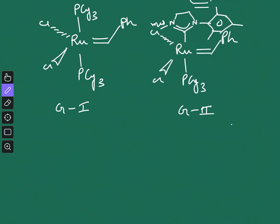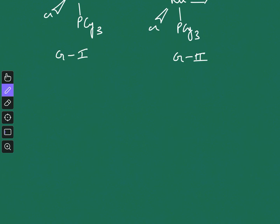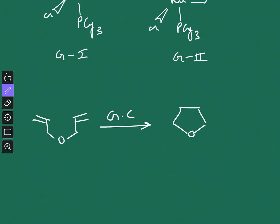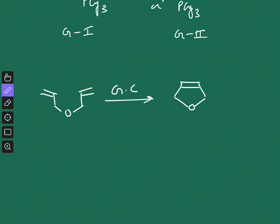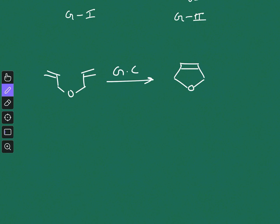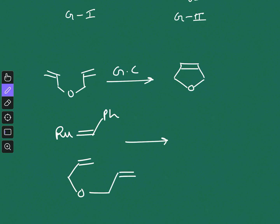Now let us see how this metathesis reaction works. Using our representative example — reacting the diene substrate with Grubbs catalyst to give the ring-closed product — in the first step, the ruthenium carbene species (we consider only the reactive part) reacts with the molecule via a 2+2 cycloaddition reaction.